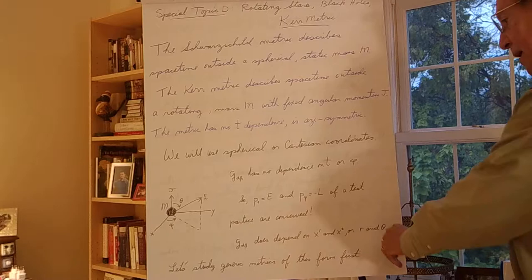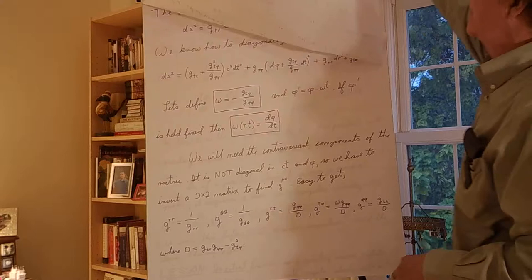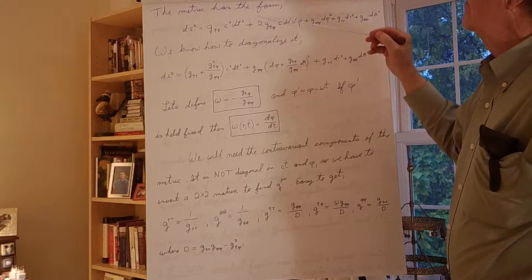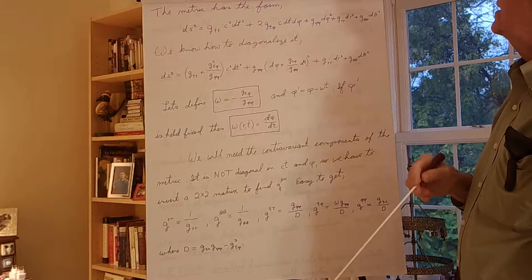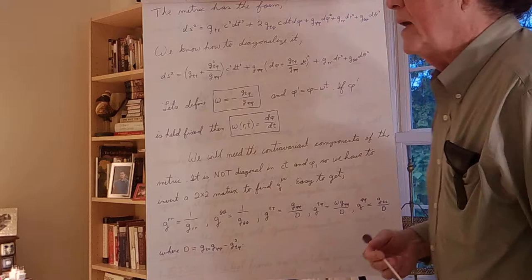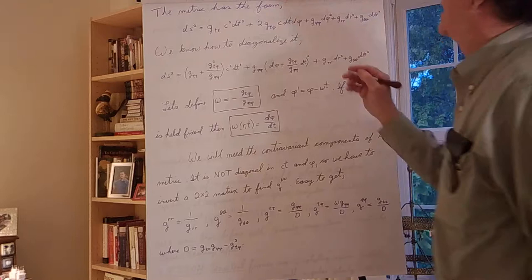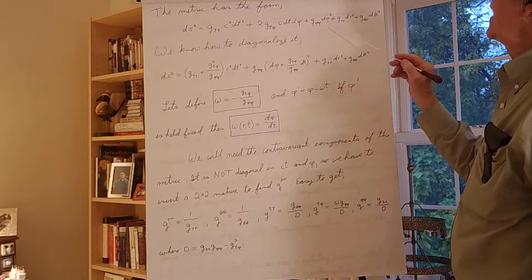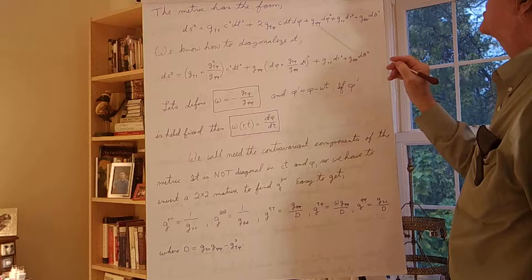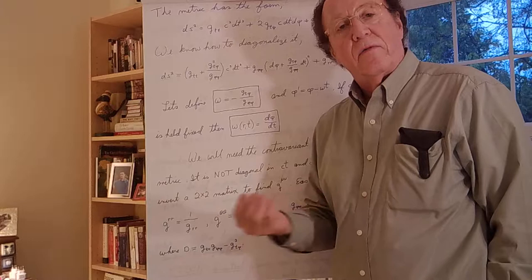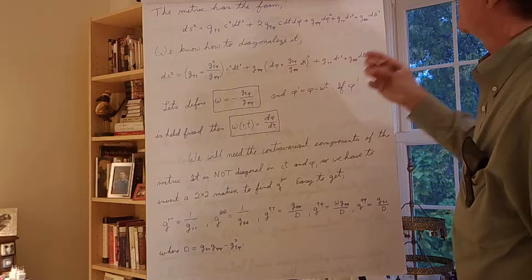Let's look at generic metrics of this form first. The metric will have a dt squared term with a g_tt component. Because we're describing rotation, there will be a coupling of t to the axial angle phi, so g_t_phi is non-zero — something we want to concentrate on. In addition there'll be a d phi squared term, a dr squared term, and a d theta squared term, each with functions to be determined from Einstein's field equations.